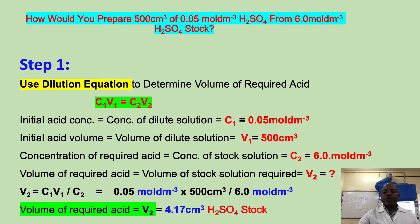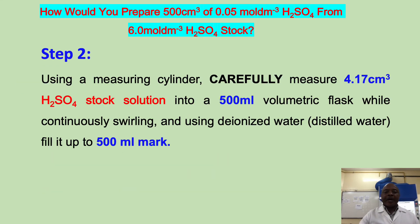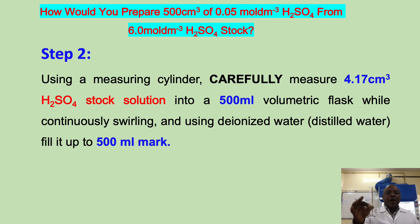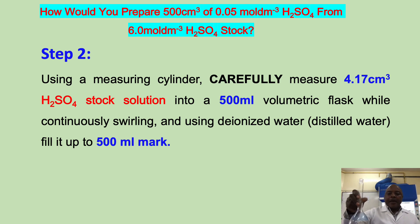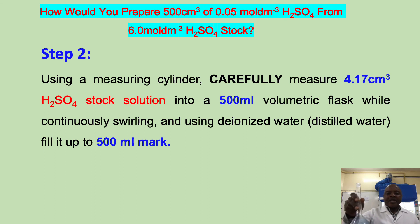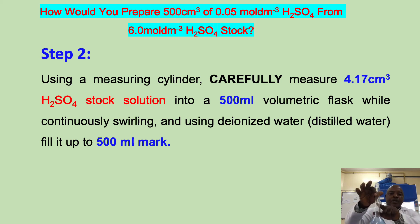That drives us to step number 2. Having obtained the required volume for dilution, we will use our measuring cylinder to carefully measure 4.17 cm³ of the stock acid into a 500 mL volumetric flask. We then add deionized water or distilled water and make it up to the mark. In that case, we now have our 500 cm³ of 0.05 mol per dm³ sulfuric acid.